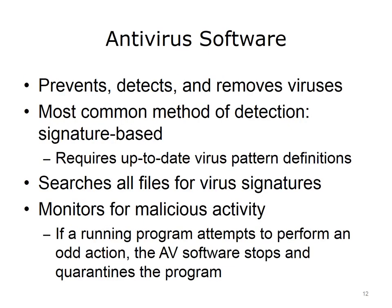Requiring all devices to have antivirus software installed is yet another way to mitigate security threats. Antivirus, or AV software, prevents, detects, and removes viruses. Several methods of detection are used to identify viruses. The most common method, signature-based detection, identifies viruses by comparing the contents of a file to a database of known virus signatures. Therefore, AV software requires up-to-date virus pattern definitions. As new viruses and new attacks become known, the AV software vendor updates the ability of AV software to catch and quarantine malicious actions.